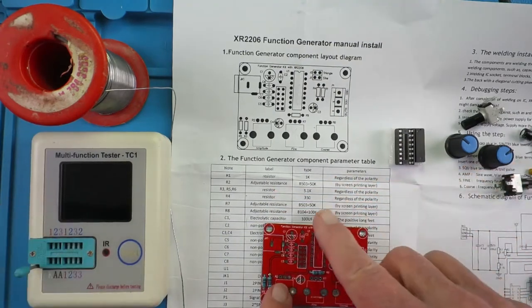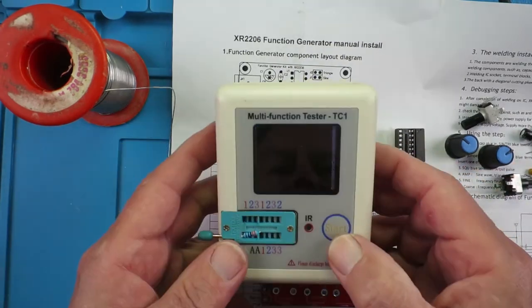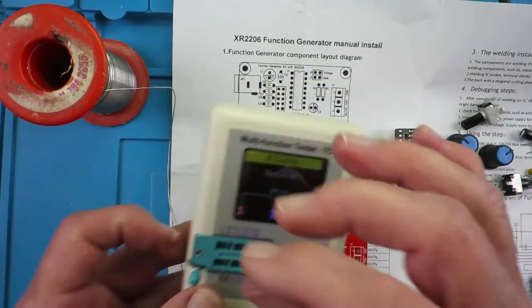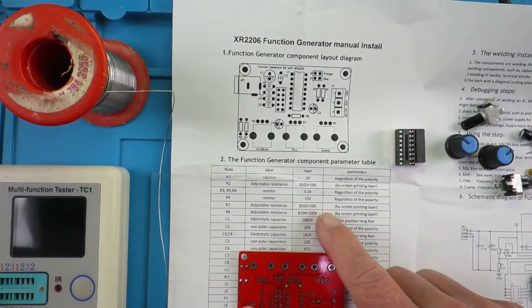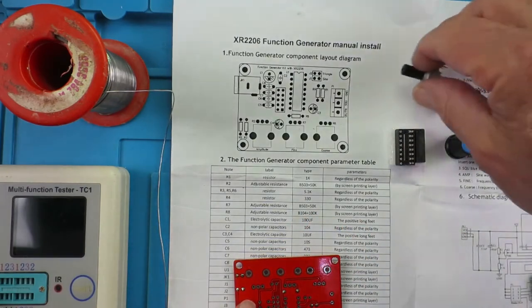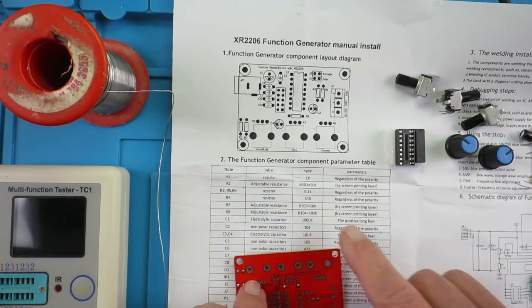Next component is R4, 330K. R7 and R8 are variable resistors as well, so they'll wait. And we'll move on to the capacitors.